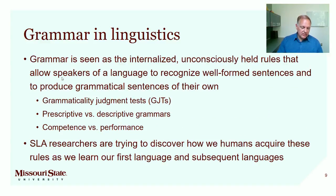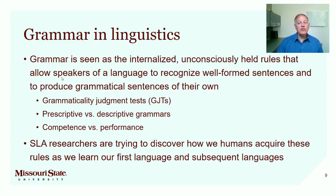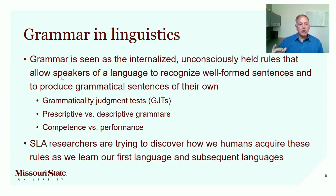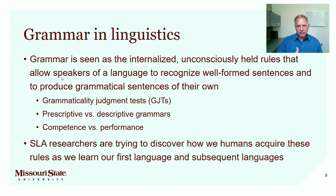Rather than a bunch of rules codified in a high school textbook or a Spanish textbook, linguists understand grammar as the internalized, largely unconsciously and intuitively held rules that allow speakers of a language to recognize well-formed sentences and to produce grammatical sentences of their own. When a native speaker says, 'that just doesn't sound right, I wouldn't say it that way,' they're falling back on those intuitive rules formed when they were very young as native speakers acquiring that language. That's their grammar. Linguists can test the parameters of this grammar by administering what are called GSTs — grammaticality judgment tests — giving speakers sentences and asking them to rate how grammatical they sound.